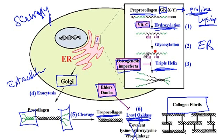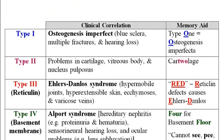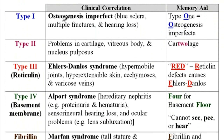Osteogenesis imperfecta is due to a defect in the triple helix formation, and this disorder is associated with a defect in collagen type 1. Ehler-Danlos has a problem with the formation of the covalent linkage between lysine and hydroxyl lysine, and this disorder is associated with a defect in collagen type 3, or reticulin. So osteogenesis imperfecta is due to a defect in collagen type 1.